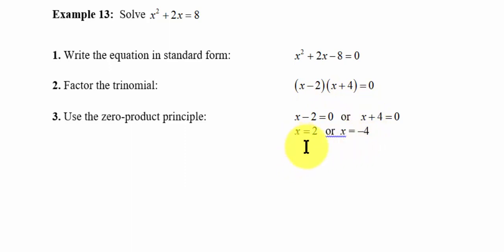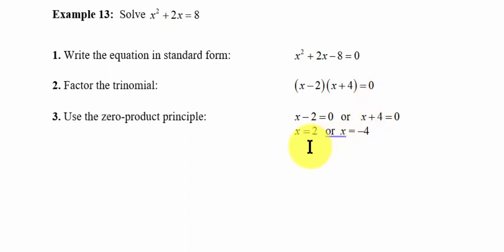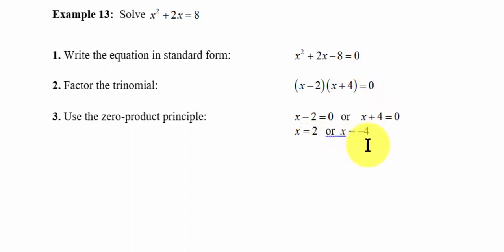So my answer would be x equals positive 2 or x equals negative 4. When we're talking about the solution, we're saying what value of x will result in zero. The value x equals negative 4 results in zero, and the value x equals 2 also results in zero. By the way, you could graph both sides of this equation, and the intersection would happen at x equals 2 and x equals negative 4.